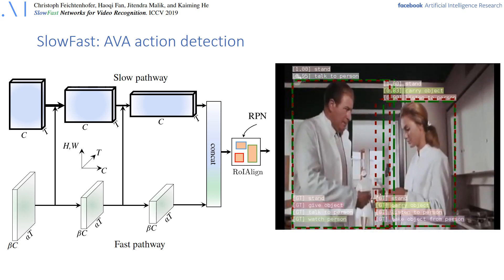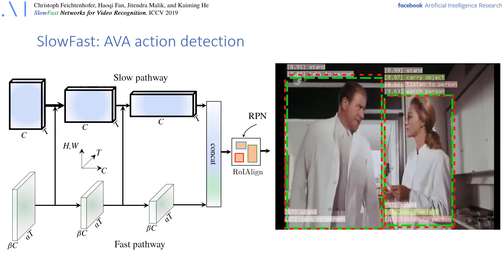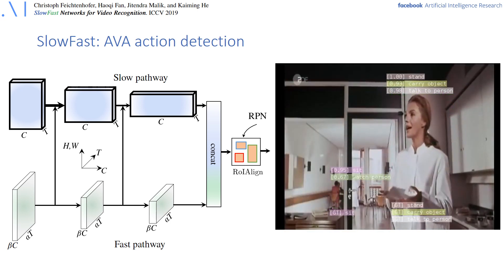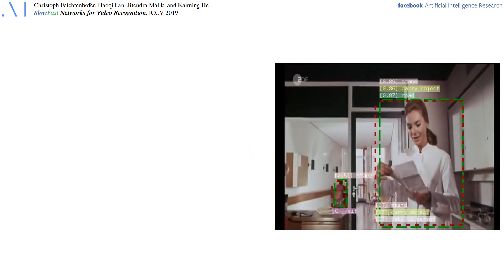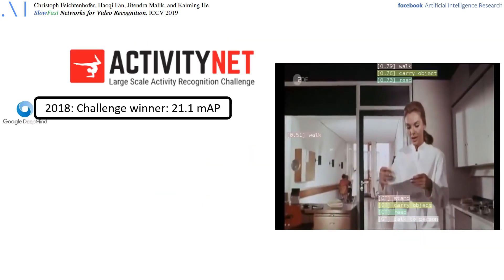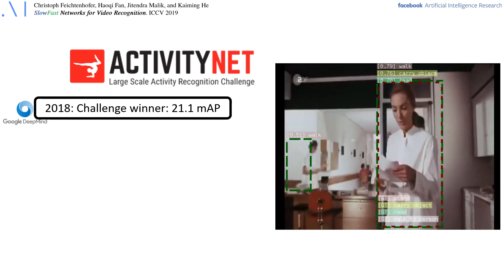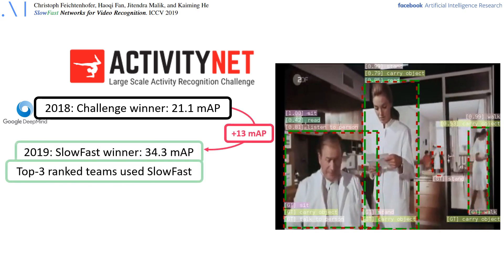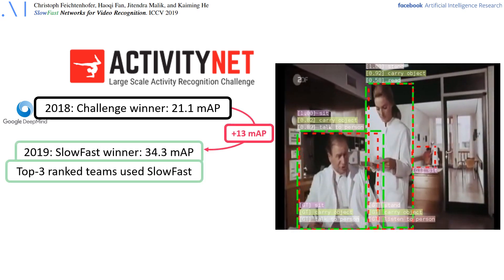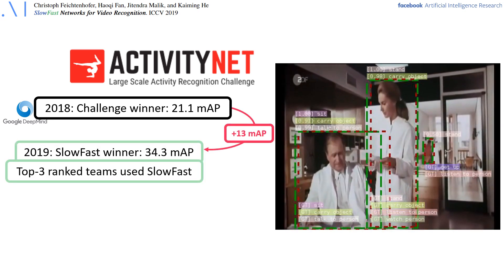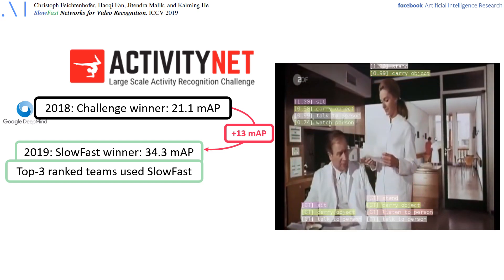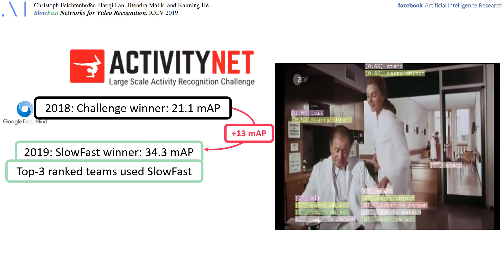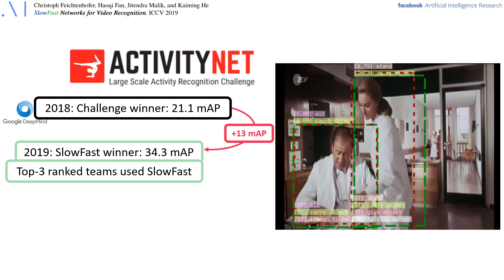In comparison to previous work, SlowFast has achieved a significant gain in detection accuracy. We also participated in the ActivityNet challenge last year where we saw a gain of 13 MAP over the winning approach from the previous year. Moreover, the top three ranked teams all use SlowFast networks as backbone, which underlines that the method is general and better received by the community.